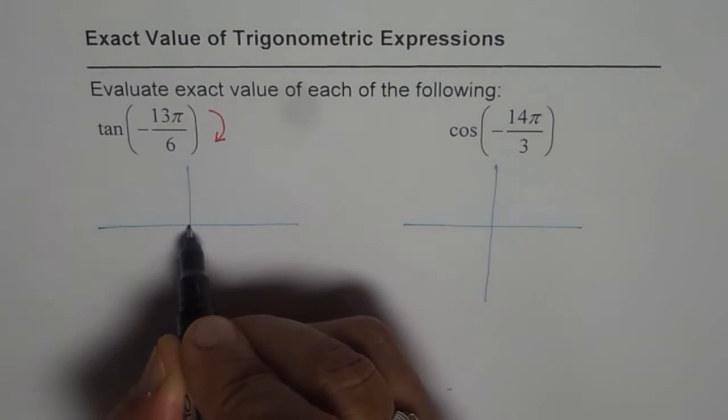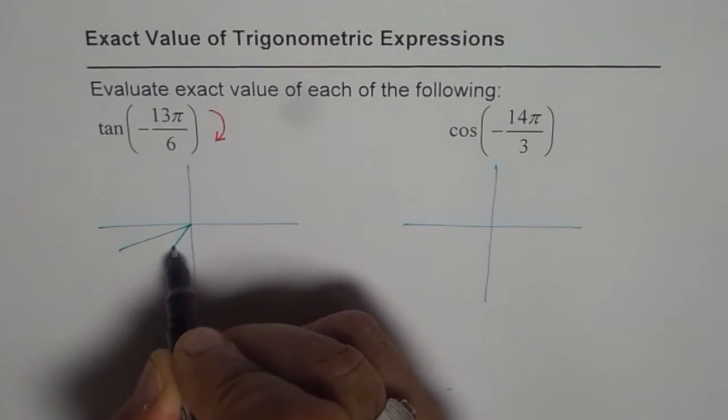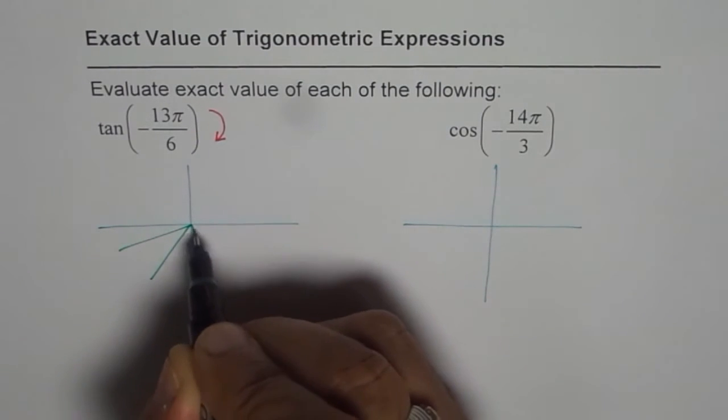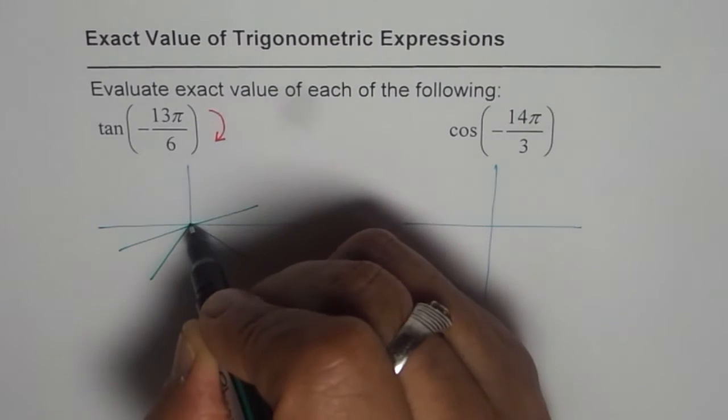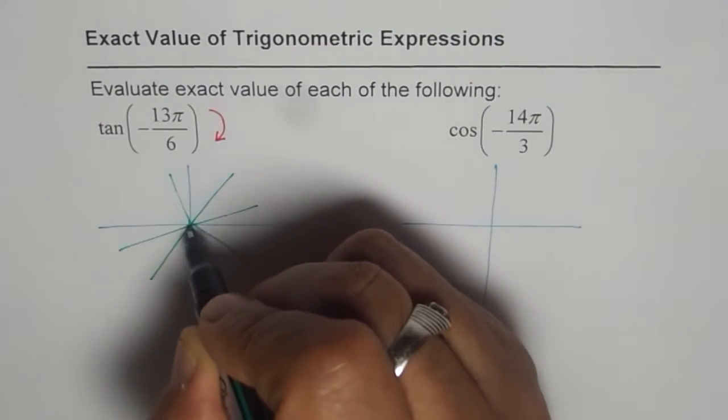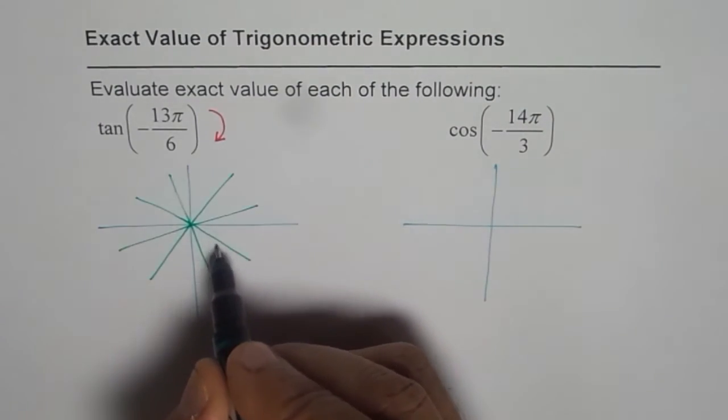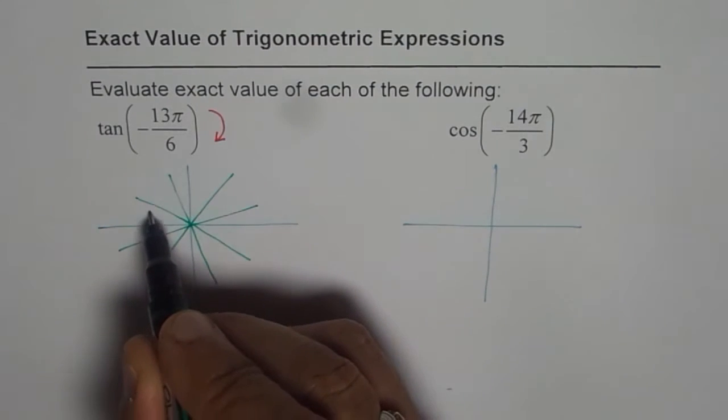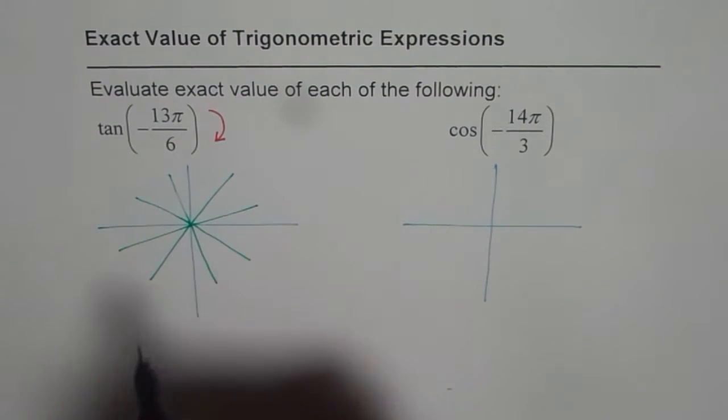6 means 3 of each. So that is how we are going to divide. This is approximate but fairly accurate. So this π has been divided into 6 and the other π is also 6, so there are 12 in all.